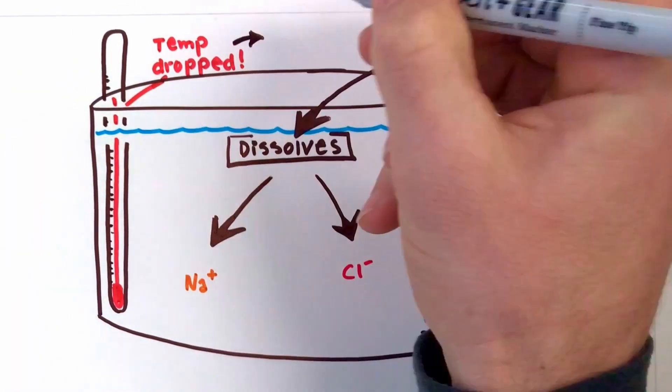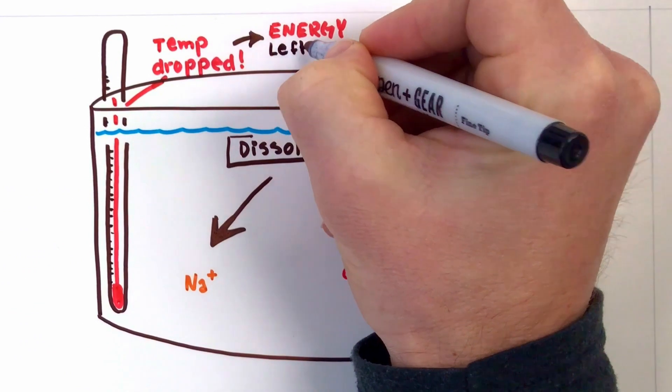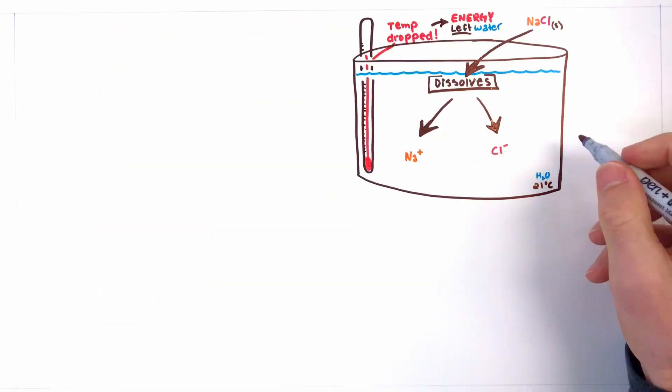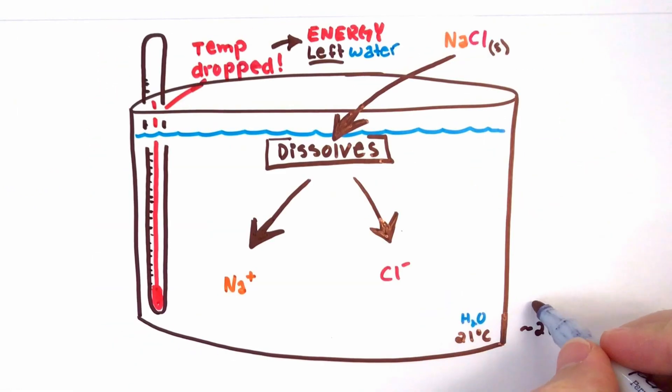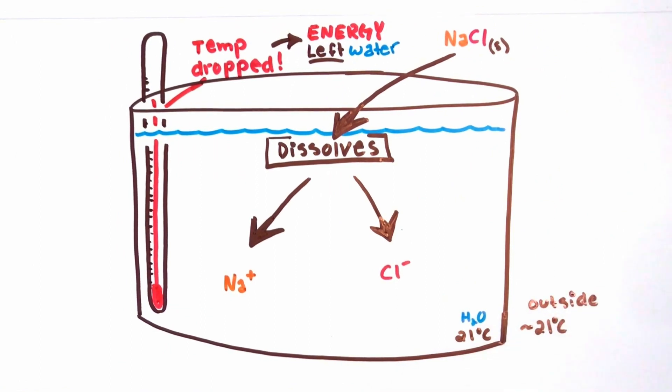If the temperature dropped, this means energy left the water, slowing the water molecules. It's also worth noting the room was 21 degrees Celsius, so energy wasn't flowing into the surrounding air.